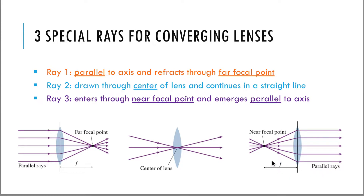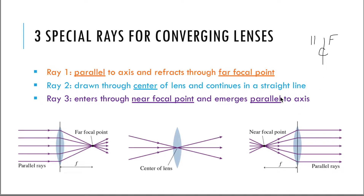The way that I remember these three rays, kind of like I did for mirrors, is I draw my line here and say: parallel on the left and focal point on the other side — this line represents my lens. The second ray just goes through the center. The third ray goes to the focal point on the left side and it emerges parallel on the right side.